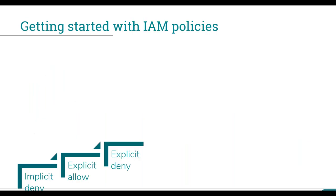Let's take a quick look at IAM policies. First, as I've already said, we start with an implicit deny — nothing is allowed until you explicitly allow it. It's also useful to consider that if you have an explicit deny statement it takes precedence over anything else. So if there are certain operations you always want to block, an explicit deny will make sure there's no chance of mistakes.